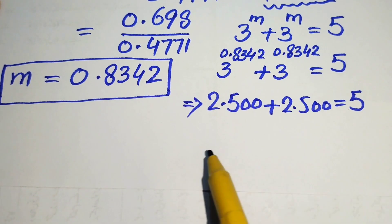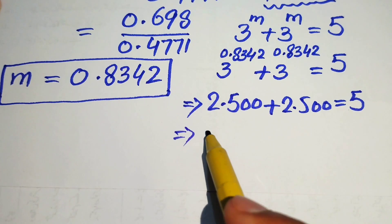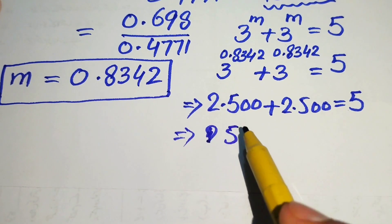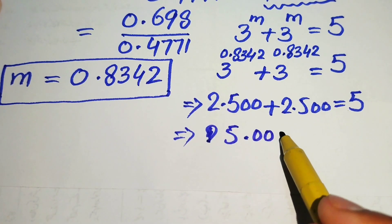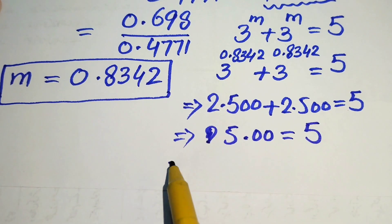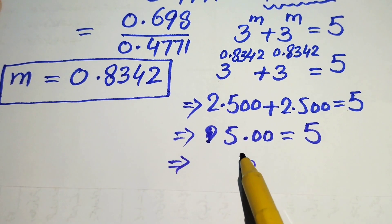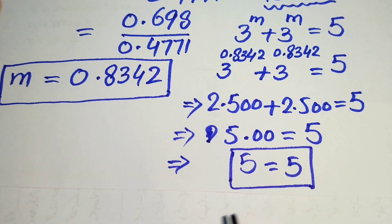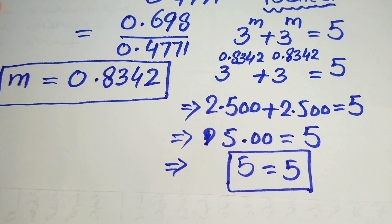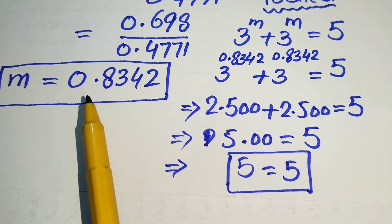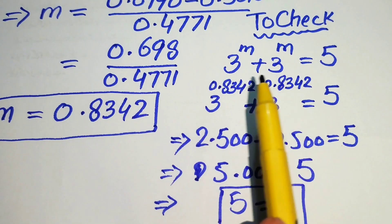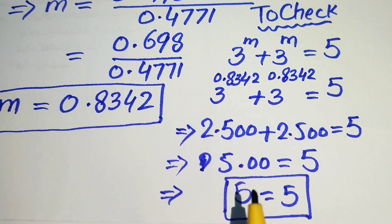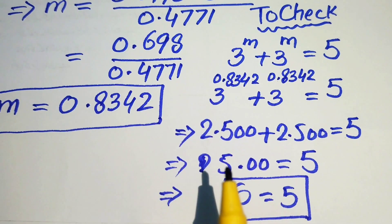Adding both values: 2.500 plus 2.500 equals 5.000, which equals 5. The left hand side equals the right hand side, confirming that m equals 0.8342 satisfies our original equation.